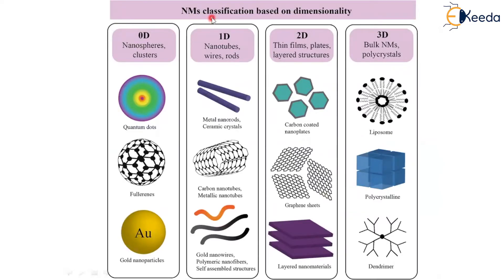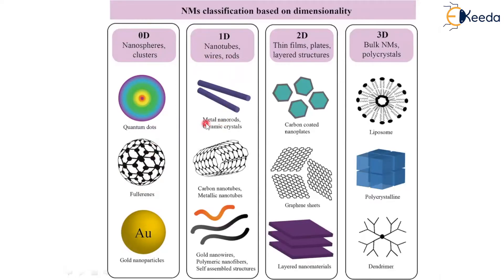Nanomaterials are classified based on dimension: zero, one, two, or three dimensional. In zero dimension, examples are nanospheres and clusters — where two to three atoms group together to form a cluster. Quantum dots, polarins, and gold nanoparticles are also best examples in the zero-dimensional category.